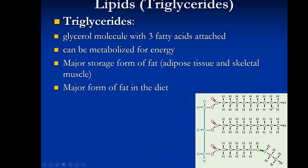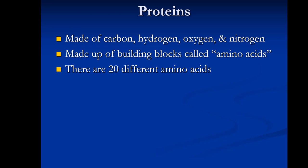Triglycerides consist of three fatty acids held together by a glycerol molecule — glycerol is three carbons plus three fatty acids. We get a lot of energy from triglycerides because most of the energy comes from the fatty acid components. This is also how we store most of our fat in the body in the form of adipose tissue and within skeletal muscle, and it is the major form of fat that we get in the diet.